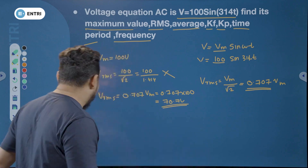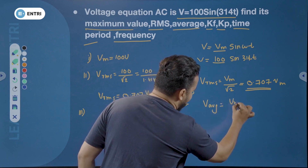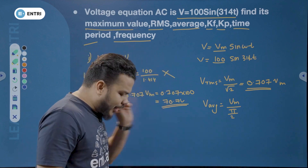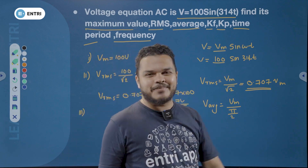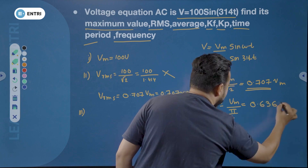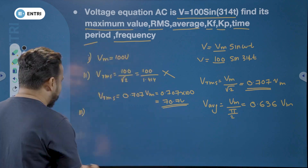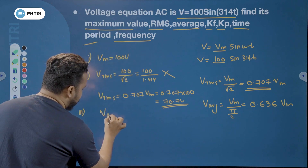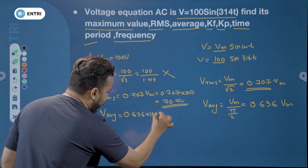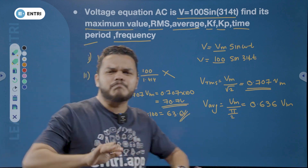Average value. The second equation is V average. What is V average? It is VM divided by (π/2). So V average equals 0.636 × VM. With VM = 100, you will get 63.6 V.